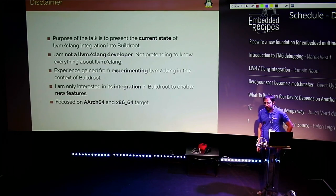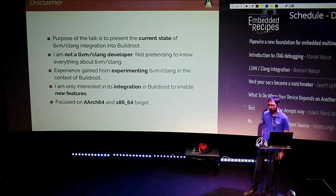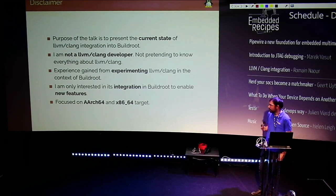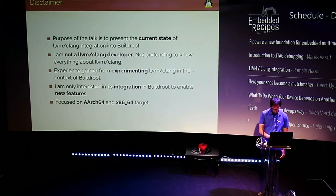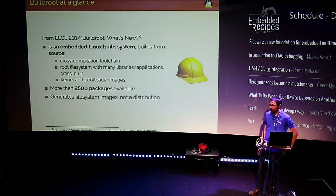First of all, I'm not at all an LLVM or Clang developer. I'm not involved in the community on the development of this work. My experience was going from building LLVM and Clang in the context of Buildroot, and I'm focusing only on what we can enable with Buildroot thanks to this technology. I mainly tested on ARM 64-bit and on x86-64. As a quick reminder, Buildroot is a tool for building embedded Linux systems from scratch.